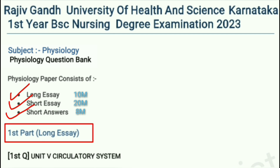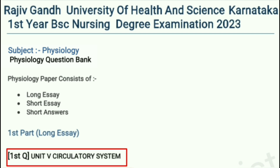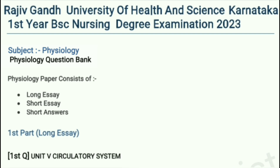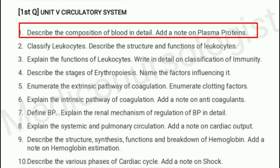Our first part is long essay. Let's see from which units the 10-mark questions come and how many such questions appear in the degree examination of 2023. The first standard question is from unit 5, the circulatory system. Important questions include: describe the composition of blood in detail, add a note on plasma proteins.